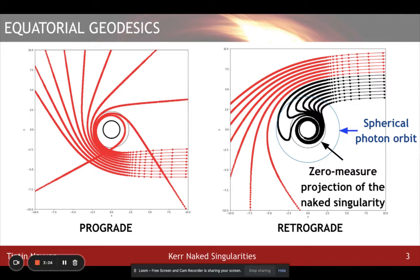However, for naked singularities, on the equatorial plane, only retrograde orbits have spherical orbits which provide the same distinction between trapped and escaped photons like regular black holes. This creates a possibly zero measure projection of the naked singularity. All prograde orbits arriving from infinity can escape back to infinity in this scenario.